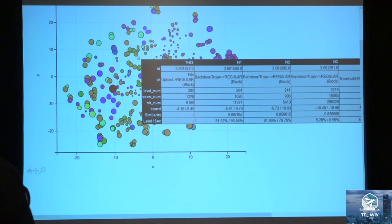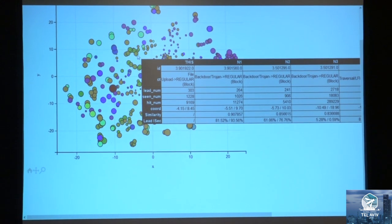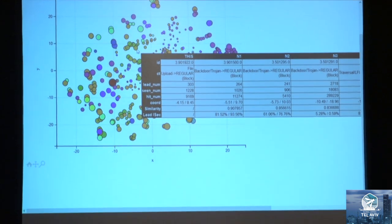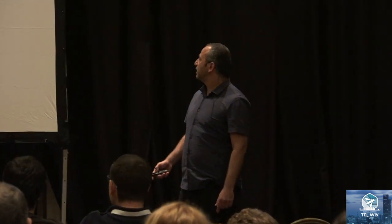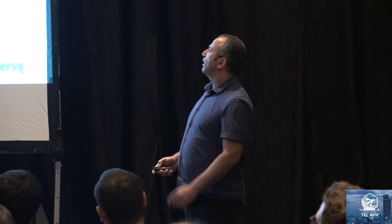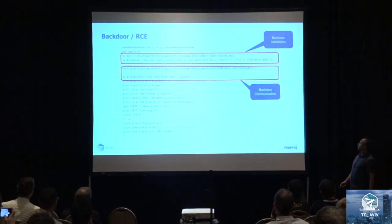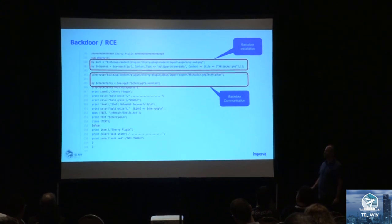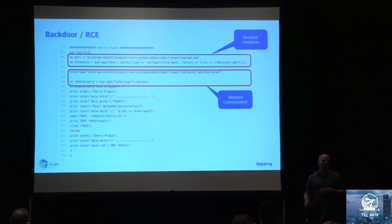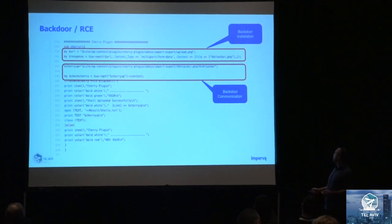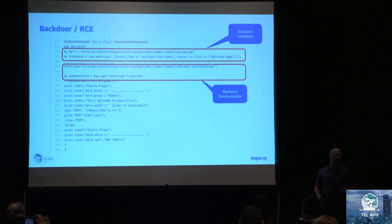We wanted to alert the customer because this is something that actually happened — meaning the file upload was successful and a backdoor was installed. However, some of our security experts provided an alternative explanation: this is called X-Attacker, which attacks a plugin called Cherry, where the attack script first tries to upload the backdoor, and immediately after — maybe to validate success — tries to communicate with the backdoor. So what we saw was not necessarily a successful file upload, but perhaps an unsuccessful one.